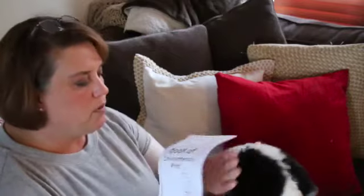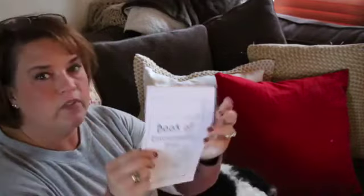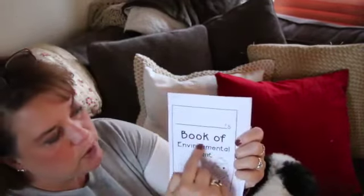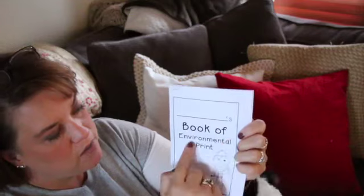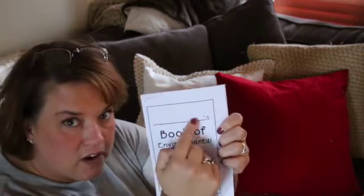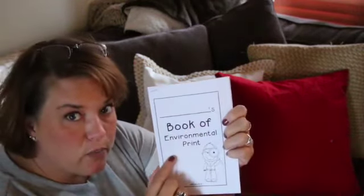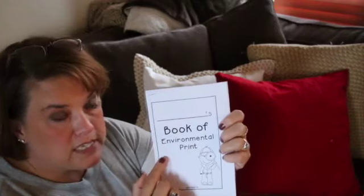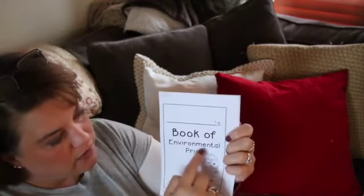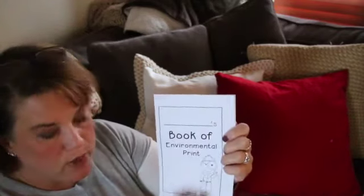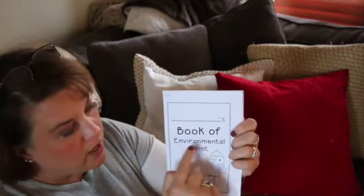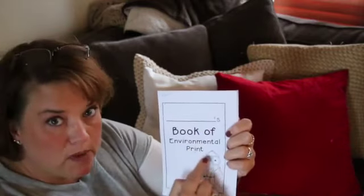You have one book here that says, Blank's book of environmental print. This line right here is where you're going to write your name. So that way it would say like Ethan's book of environmental print or Aubrey's book of environmental print.